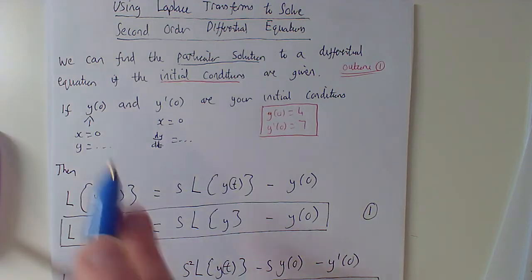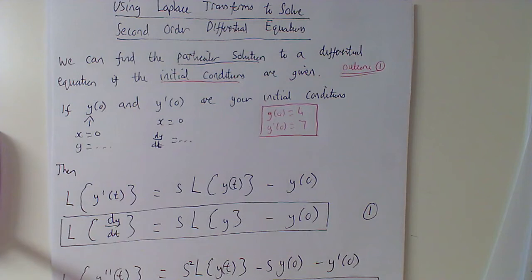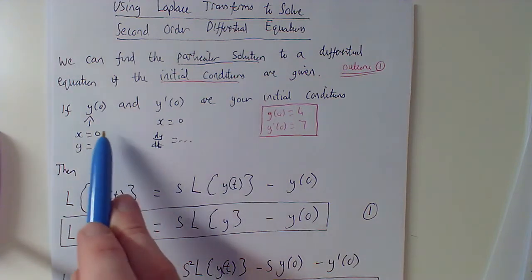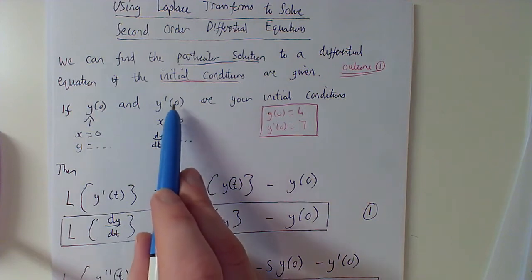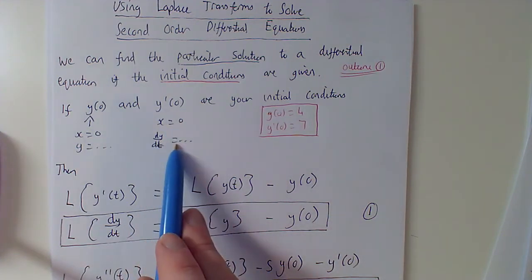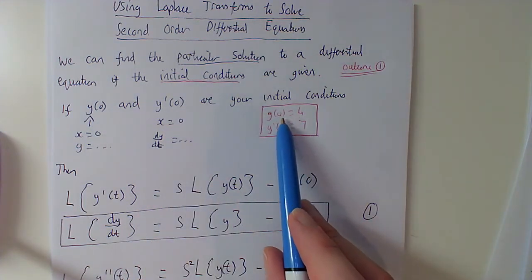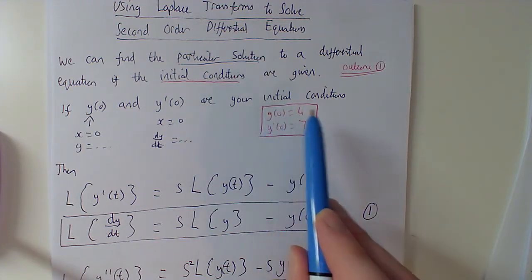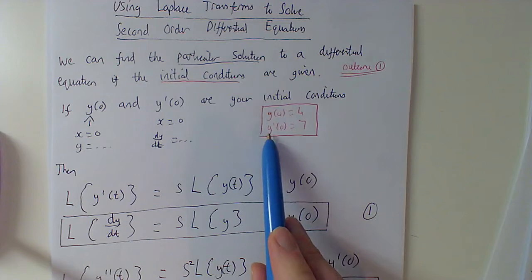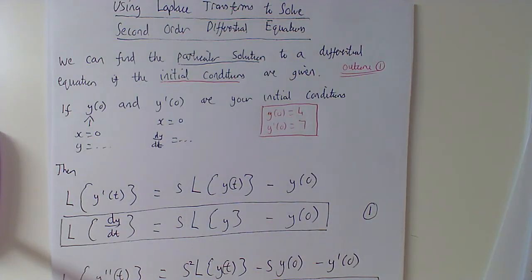Remember, if you get two initial conditions, y(0) and y'(0): y(0) means when x equals 0, y equals whatever, and y'(0) means when x equals 0, dy/dt equals whatever. For example, y(0) means when x equals 0, y equals 4, and y'(0) means when x equals 0, dy/dt equals 7. So you've got two initial conditions, 4 and 7 here.